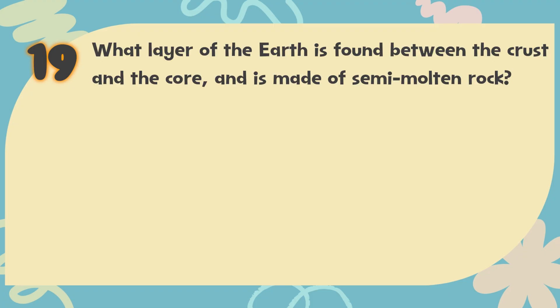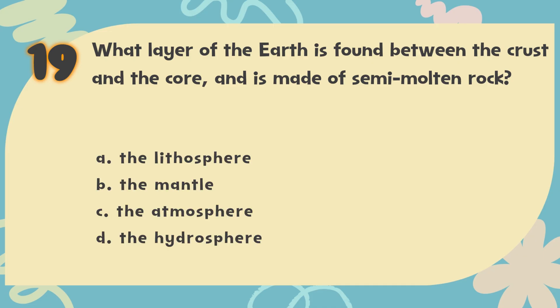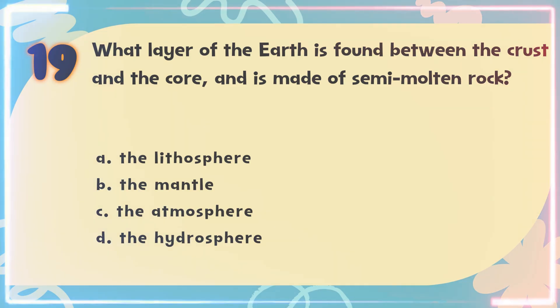Number 19. What layer of the earth is found between the crust and the core, and is made of semi-molten rock? The choices are: A. The lithosphere. B. The mantle. C. The atmosphere. D. The hydrosphere.